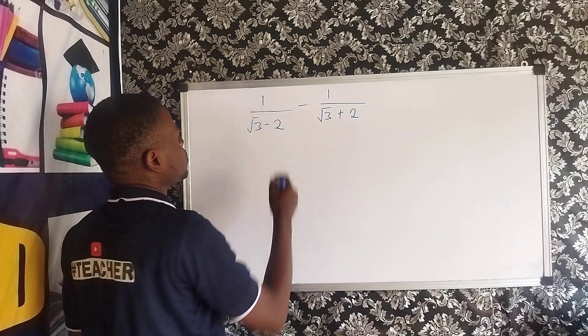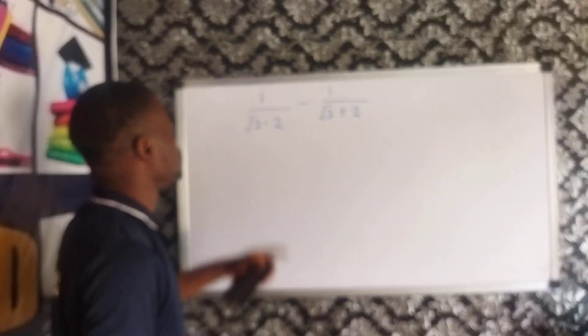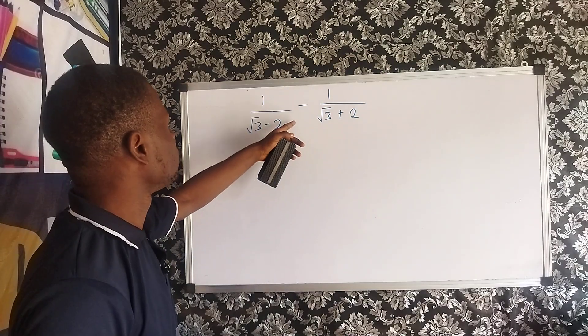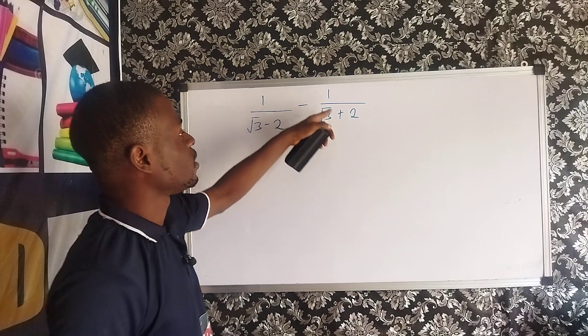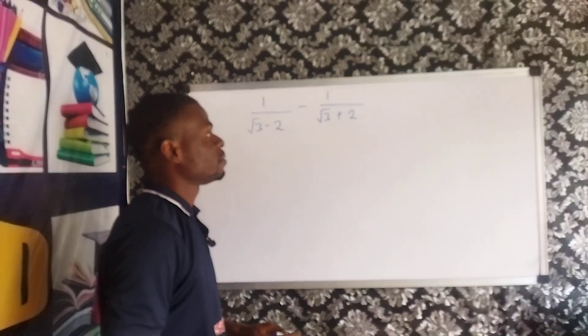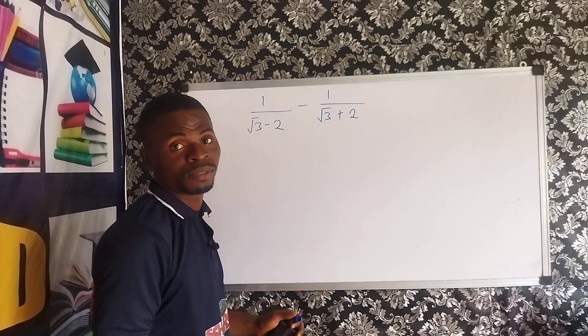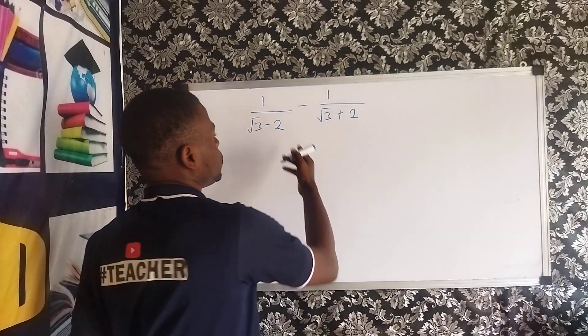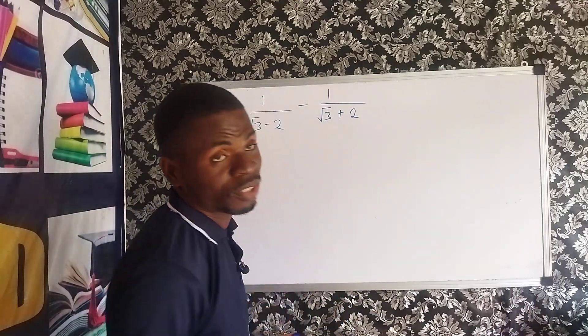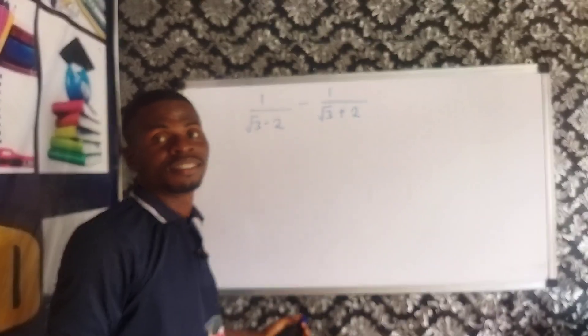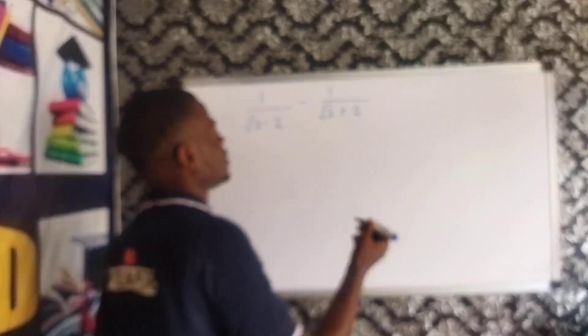Now, we have 1 divided by root 3 minus 2, minus 1 divided by root 3 plus 2. So, if you look at this, this is a fraction.